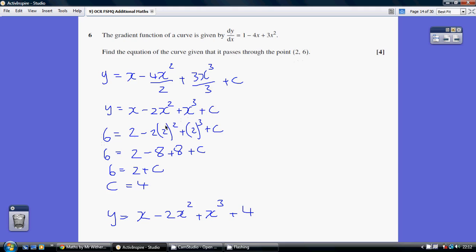y is 6, x is 2, 2, 2 and 2. So, work this out and you get c being 4, our constant is 4, so our final answer is x minus 2x squared plus x cubed plus 4.